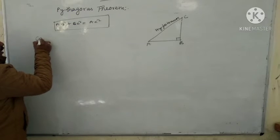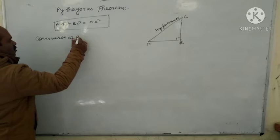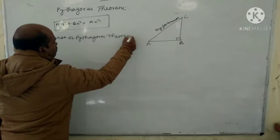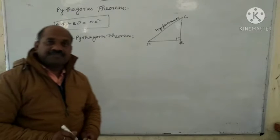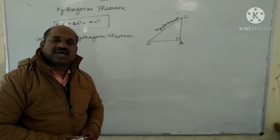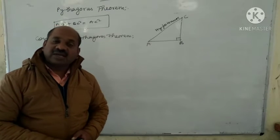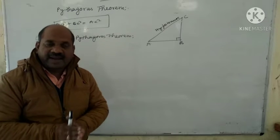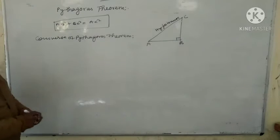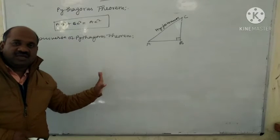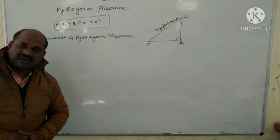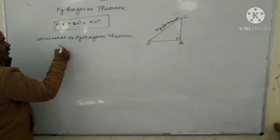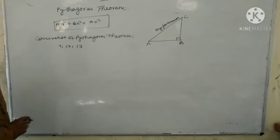Converse of Pythagoras Theorem. The converse states: if the square of one side of a triangle is equal to the sum of the squares of the other two sides, then it is a right angle triangle.